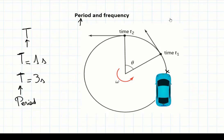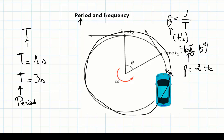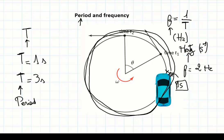On the other hand, frequency is defined as the inverse of the period, and it describes how many cycles can be completed in one second. The unit of frequency is hertz (Hz). For example, if the frequency is 2 Hz, that means the object completes two full cycles in just one second. That is the definition of frequency.